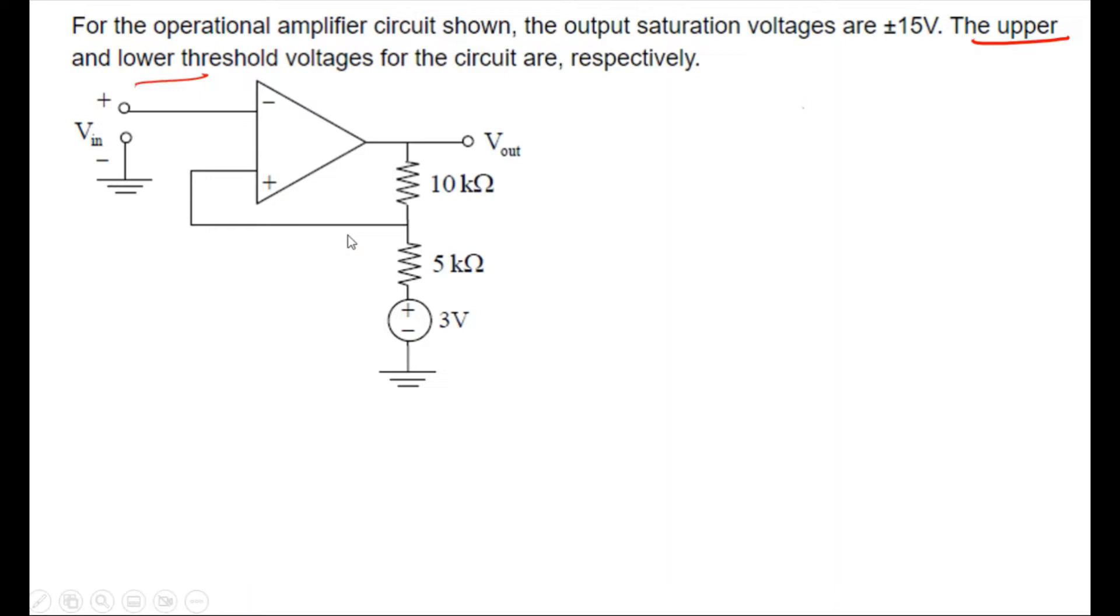So upper and here is the lower, these two we want. Let's start doing this one. Since you already know this is an op-amp, it will have virtual ground. So it will have the same potential due to the virtual ground. This V_in will appear here, okay? This will become your V_in.